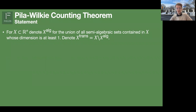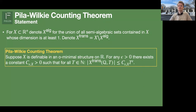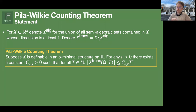That's what the Pila-Wilkie counting theorem captures. Before stating it, one more definition: for any set X in the reals, you can take its algebraic part — the union of all semi-algebraic sets of dimension at least one contained in X. Its complement, everything not in this set, is the transcendental part of X. The counting theorem says: if X lives in an O-minimal structure, then the number of rational points on the transcendental part of height at most T can be bounded by T^ε for any ε > 0, at the expense of a larger constant. So asymptotically, this growth is slower than any polynomial.